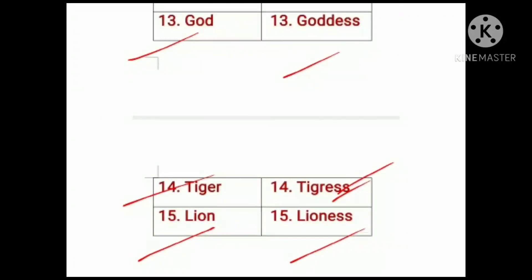So these were examples related to the different parts. In part one we discussed how you can change from masculine to feminine by just using a different word, and in part two we learned about adding E-double-S after the word to convert a masculine gender noun into a feminine gender noun.